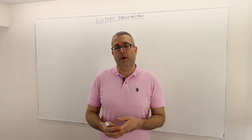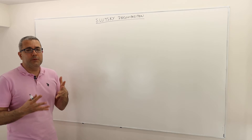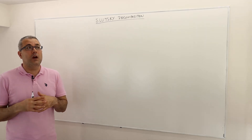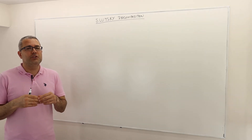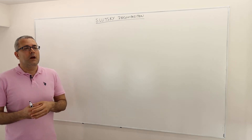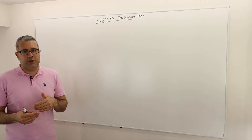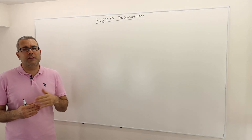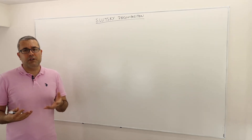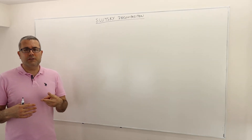Let's talk about Slutsky decomposition. What's the purpose? We are trying to separate the income effect and the substitution effect when the price of a good changes. Consider the simplest environment where we have two goods X and Y, and suppose that everything is fixed except the price of good X. We decrease the price of good X, which shifts the budget curve, and because of this shift the demand will also change — it will normally increase if it is a superior good.